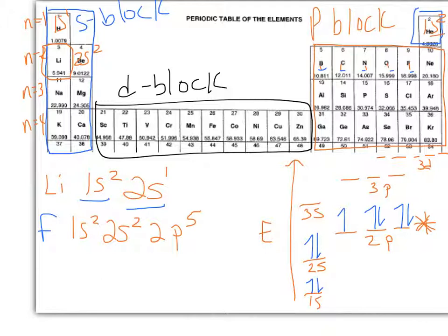Now remember that we can abbreviate this using helium, which is the previous noble gas. Here's fluorine, and here's helium, the previous noble gas. So we could also write this as helium in brackets, and then the valence electrons 2s2 2p5. That's the electron configuration for fluorine.